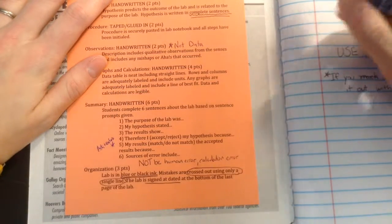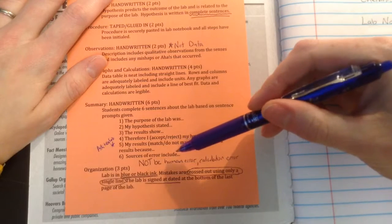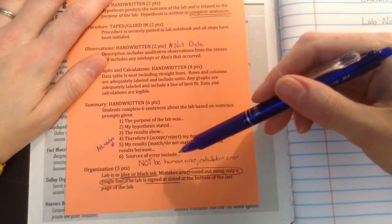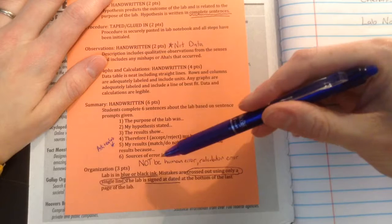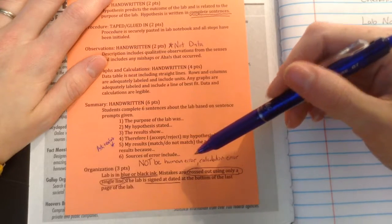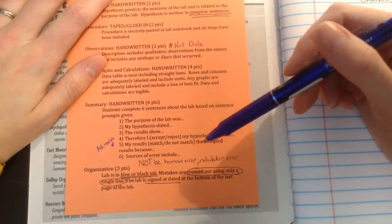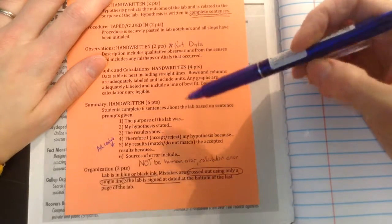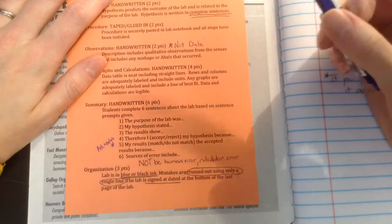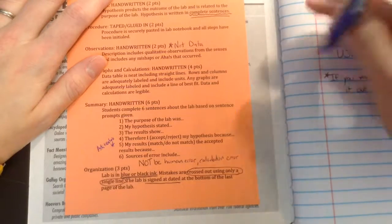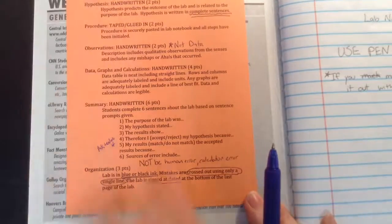So that you can compare to what you should have gotten. Sources of error include think about things that went wrong. Don't write human error. Don't write calculation error. In this lab, sources of error are sometimes maybe contamination, maybe some of the chemicals got mixed together, you didn't rinse something out well enough before moving on to the next substance.